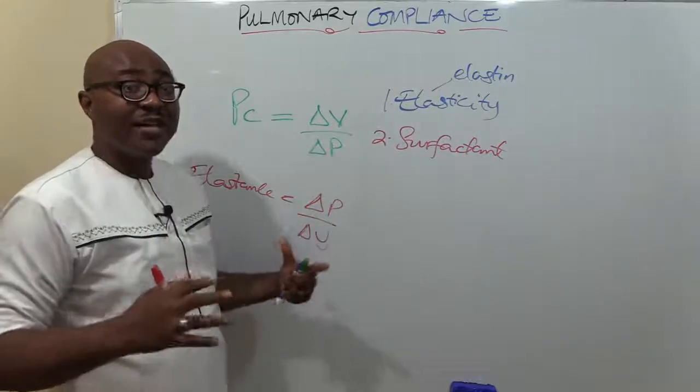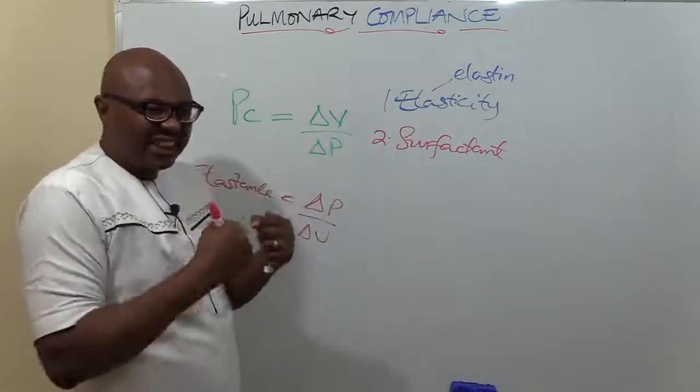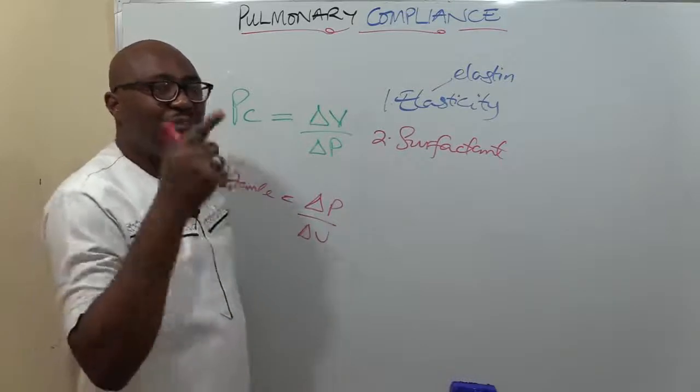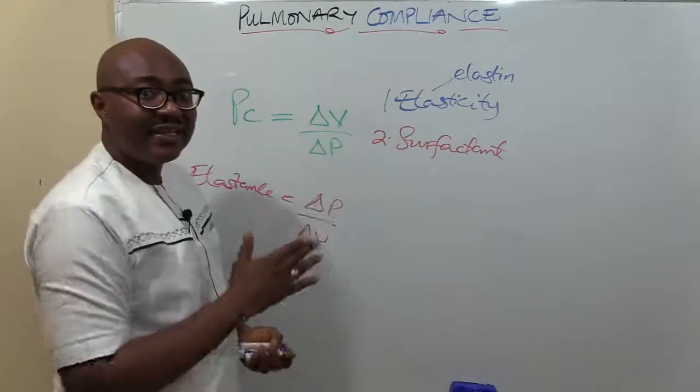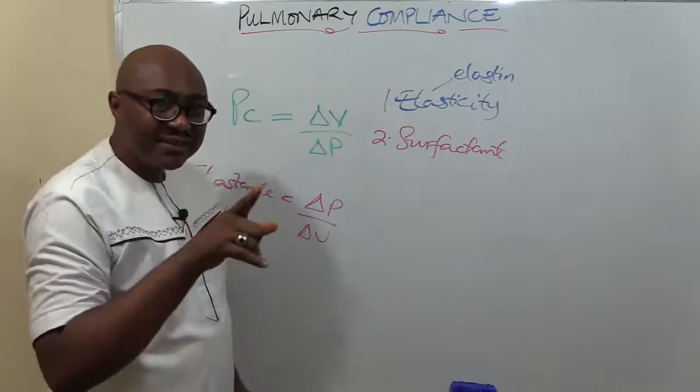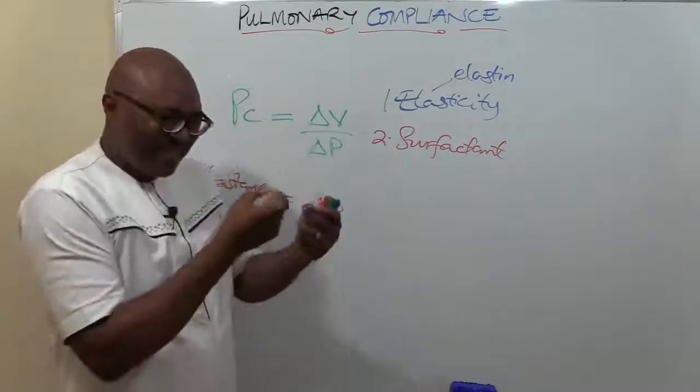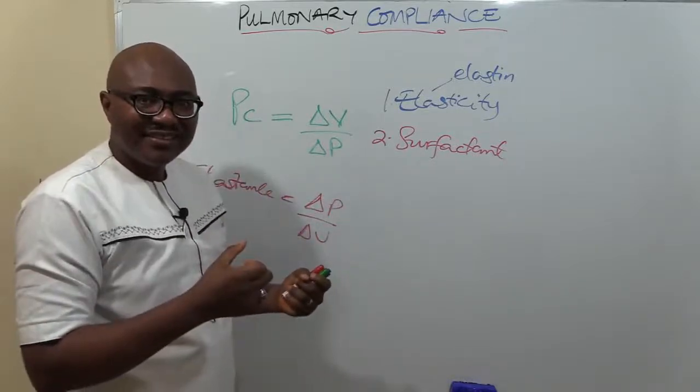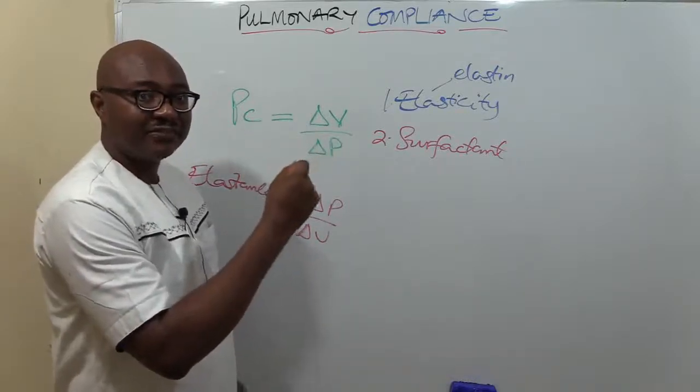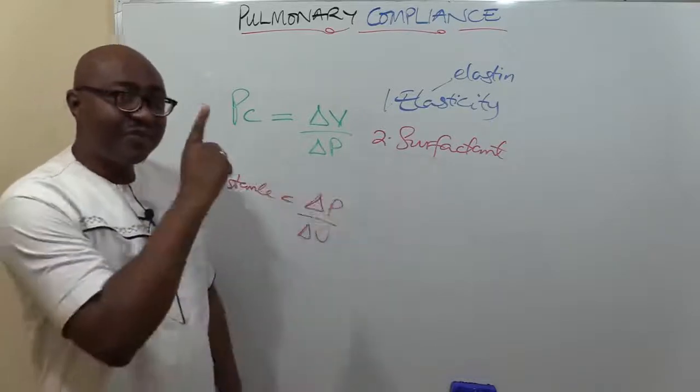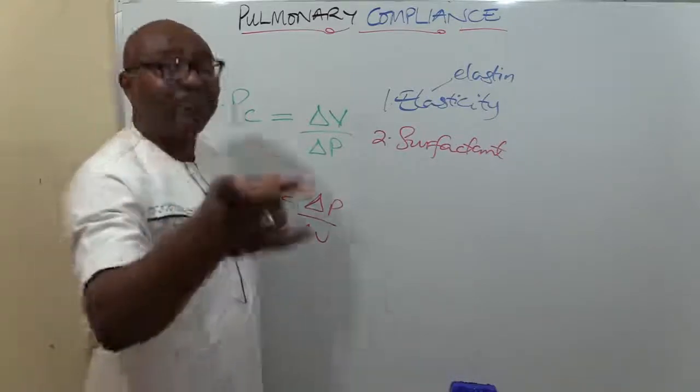When there's rigidity, it doesn't stretch much. Those people have problems with inspiration. A good example on the rigid side is what is known as pulmonary fibrosis. Fibrosis, just like scar tissue all over the lungs, makes it rigid, doesn't stretch much. So after the break we're going to be dealing with this subfactor - very important. Examiners like to ask it a lot in exams. Don't go anywhere after this break.